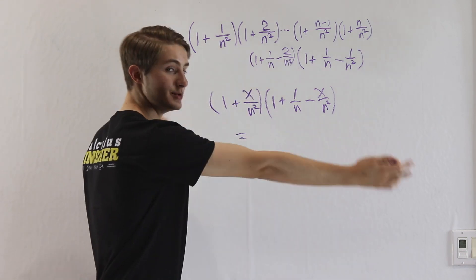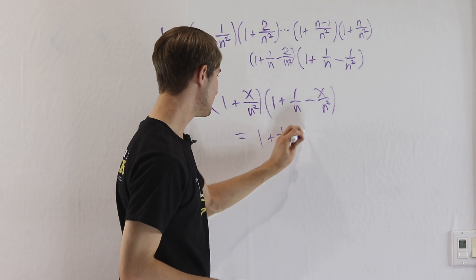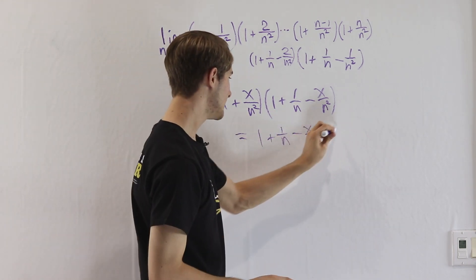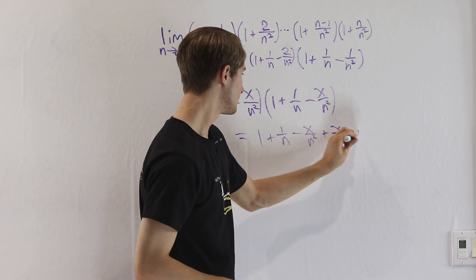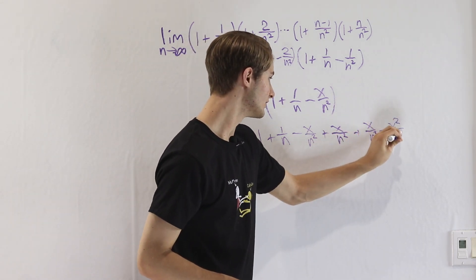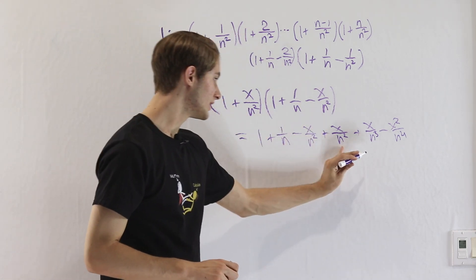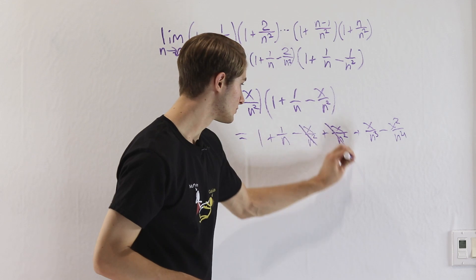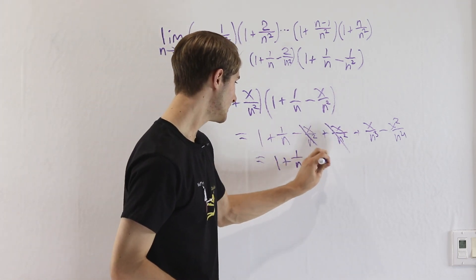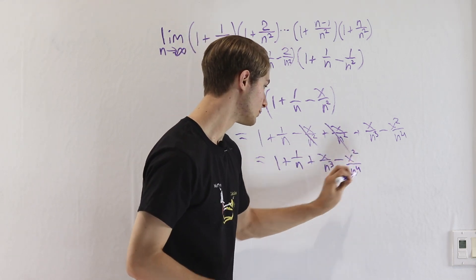Let's see what happens if we expand this out. Looking at the left factor, we get 1 plus 1 over n minus x over n squared, then plus x over n squared plus x over n cubed minus x squared over n to the fourth. Then we see plus x over n squared minus x over n squared — those cancel. And we get 1 plus 1 over n plus x over n cubed minus x squared over n to the fourth.